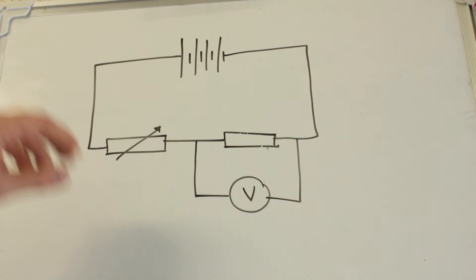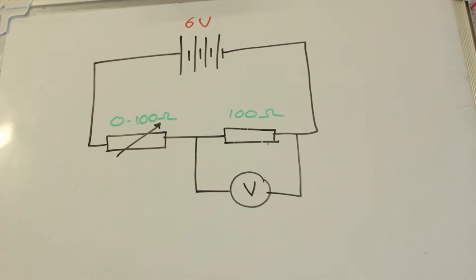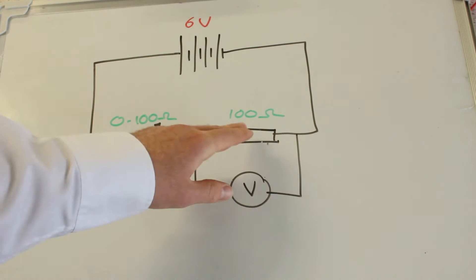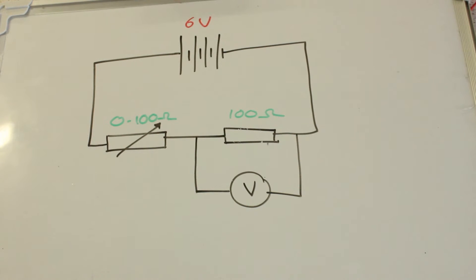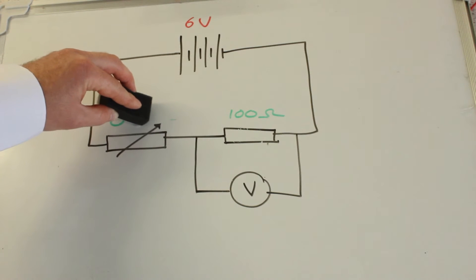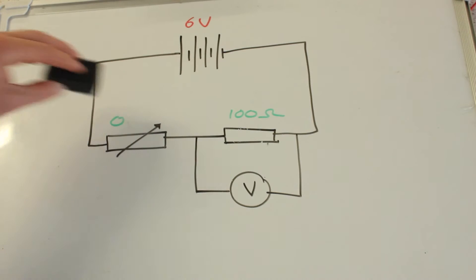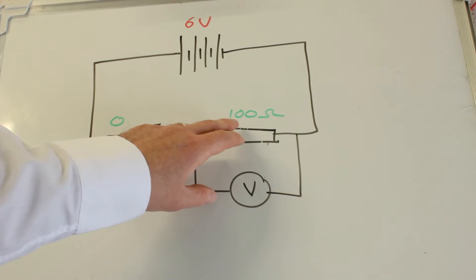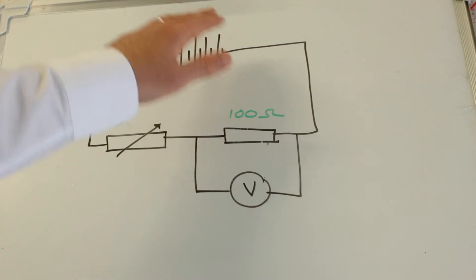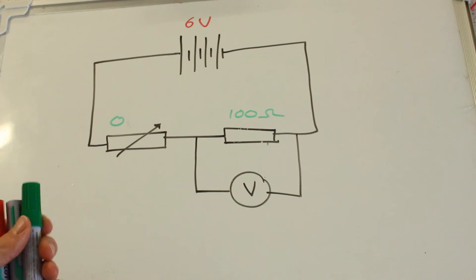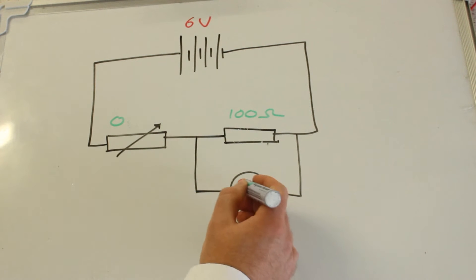To keep the maths nice and simple, I'm just going to talk about this resistor being a 0 to 100 ohm variable resistor, this one being a 100 ohm fixed resistor, and this being 6 volts. So initially I could have this set on zero ohms. Now clearly the ratio is zero to a hundred, so if you like, a hundred percent of that voltage is here, the voltmeter reads six.